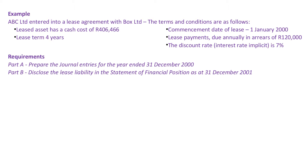In this video, we're going to look at a very short example. ABC Limited entered into a lease agreement with Box Limited. The terms and conditions are as follows: the leased asset has a cash cost of $406,466; the lease term is four years; the commencement date of the lease is 1 January 2000; the lease payments, which are due annually in arrears, are $120,000; and the discount rate — the interest rate implicit in the lease — is 7%.